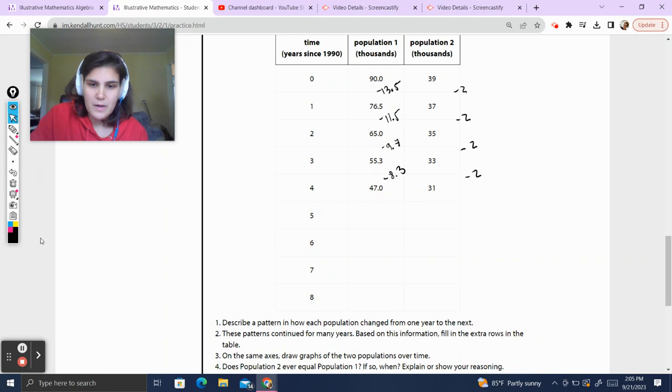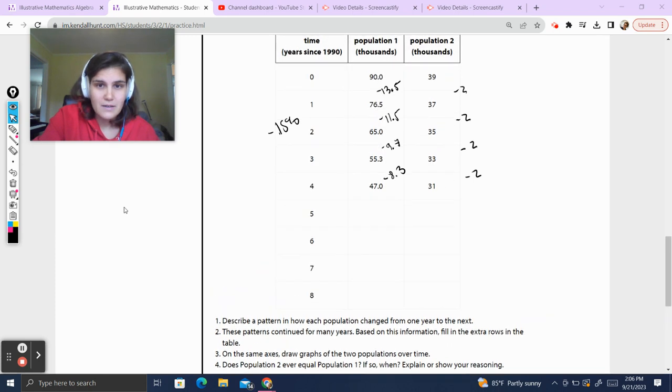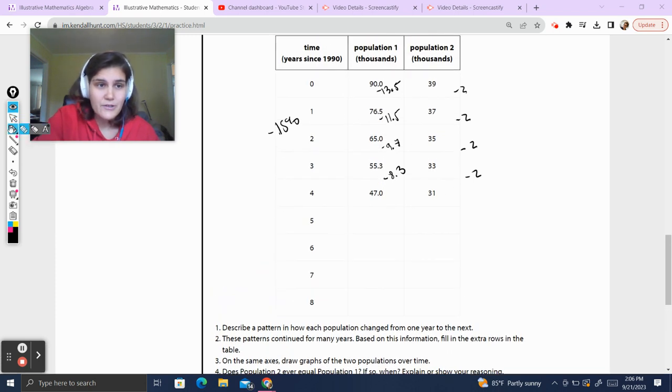So in this case, we could do one more. 55.3 to 47. That's going to be minus 8.3. I don't see a pattern off the top of my head. So let's go ahead and describe this. Describe the pattern how each population changed from one year to the next. Well, the population 2 was subtracted by 2. And then this population, I cheated and I looked at the answer. This is minus 15% each time. Now, for a question like this, that's a review question at the end of the practice set, I wouldn't spend a lot of effort looking for exactly what the percent subtraction is, unless you really wanted to. So it's a 15% decrease each year. Put in the comments if you want to know how they calculated that.